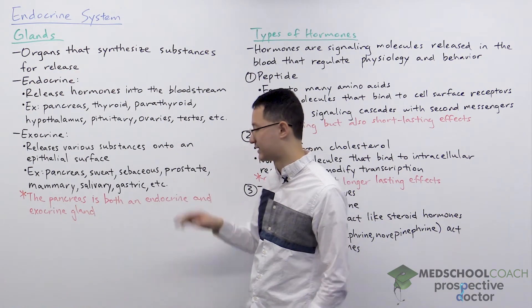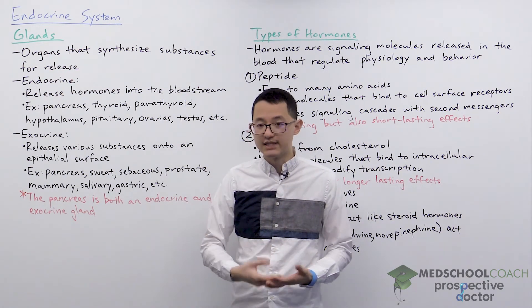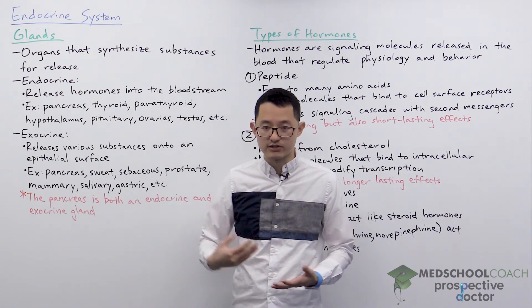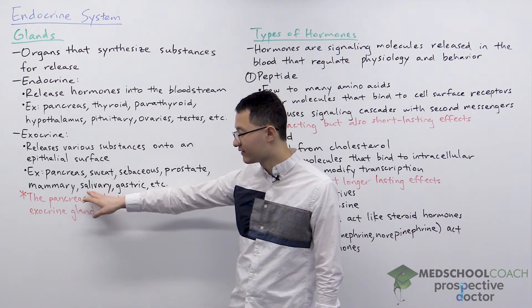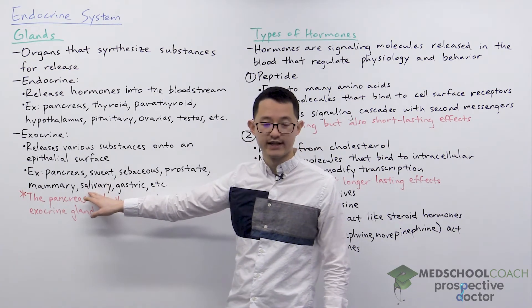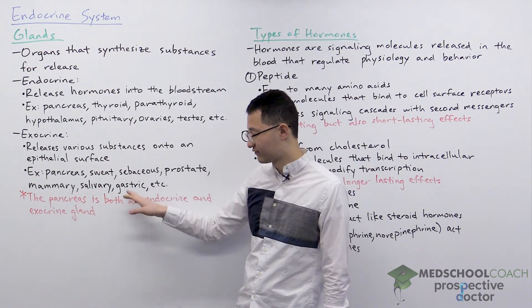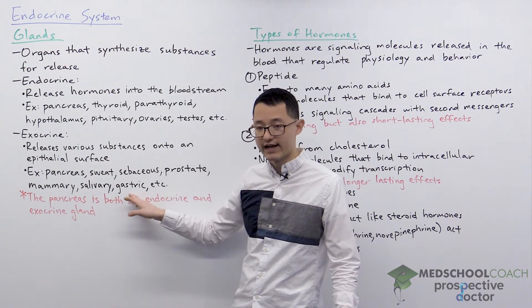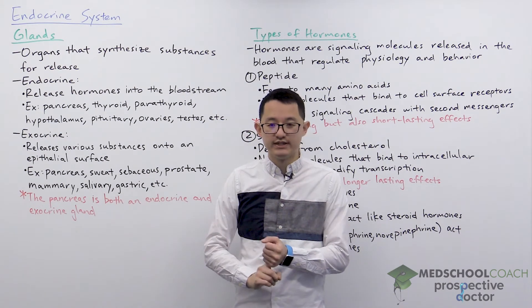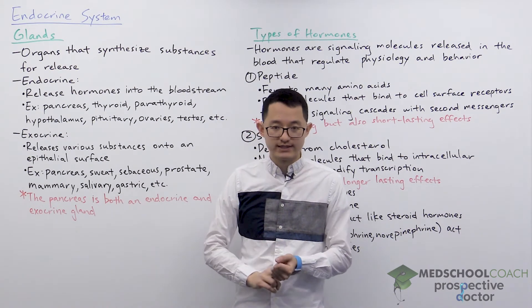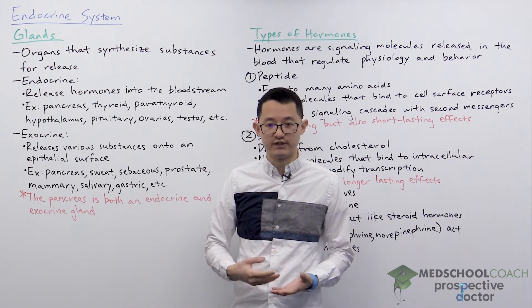The prostate gland secretes a component of semen that passes through the urinary tract in males. The salivary gland secretes saliva in the mouth, which is part of the GI tract. The gastric glands secrete acid, pepsinogen, and mucus into the stomach, another component of the GI tract.